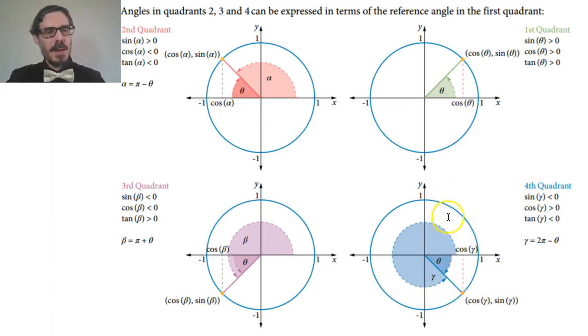If you need to remember that, you can try CAST. Or you can start in quadrant 1 and go around. So you might get ASTC. For example, all stations to central.